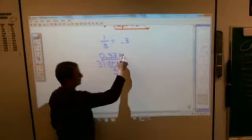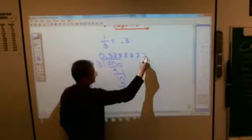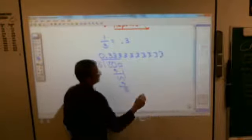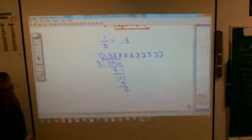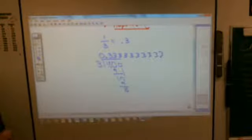All right, you can keep adding zeros, and this will keep going on forever. So rather than have you write all those threes out forever, what do we do?